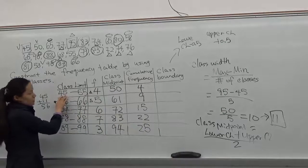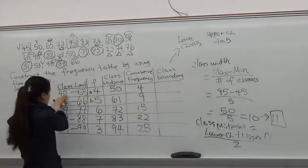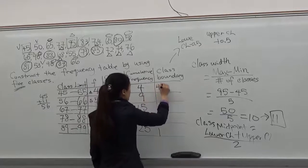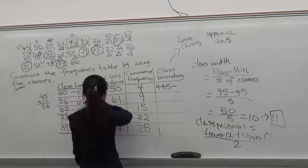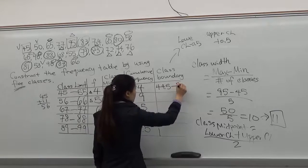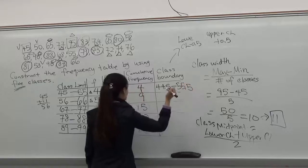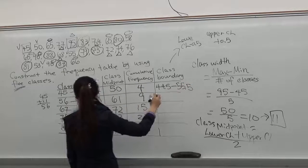The first lower class limit is 45. 45 minus 0.5 is 44.5. And 55, you have to add 0.5 to it. 55.5, and follow the same for the rest of them.